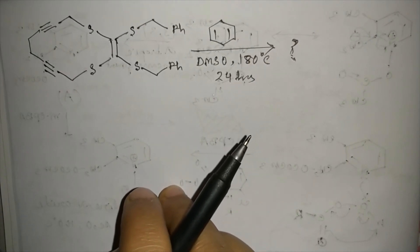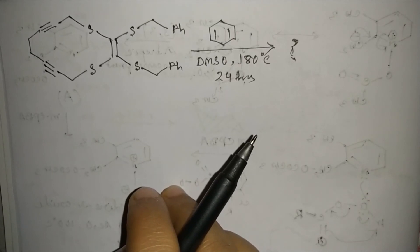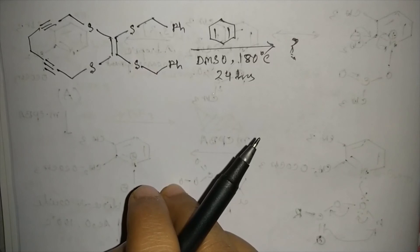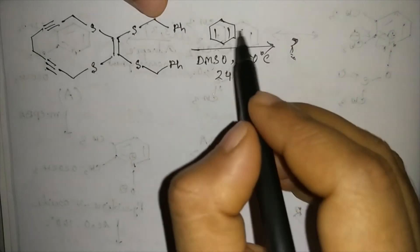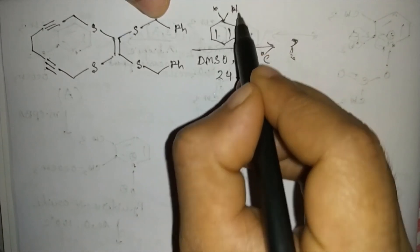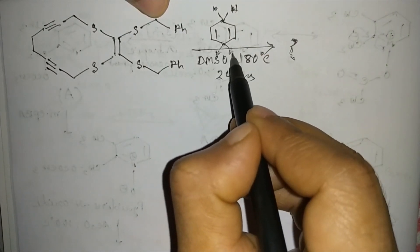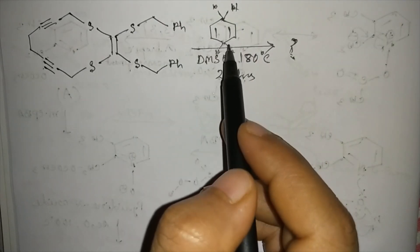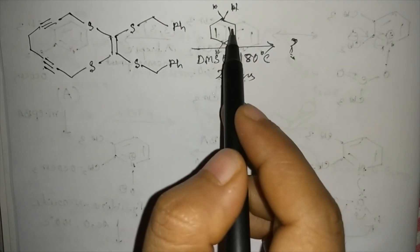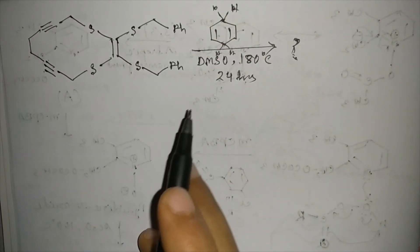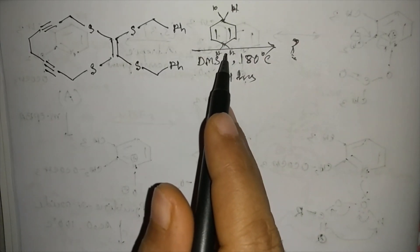This is a hydride donor. In the previous problem, Bu₃SnD gave deuterium, and here it will give hydrogen. There are four hydrogens here, so if two hydrogens are given by the donor, the ring will achieve aromaticity and a benzene ring will form. So this is a hydrogen radical donor.